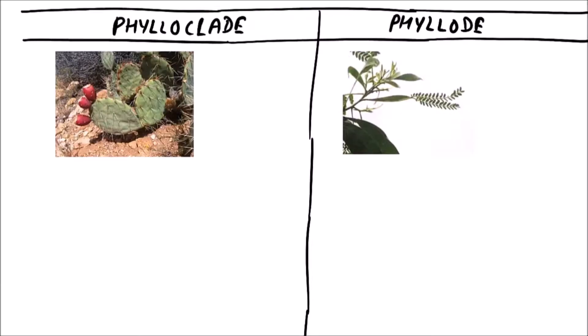Welcome to Studio Biology. In this video we are going to discuss the differences between a phylloclade and a phyllode. 'Phyllo' means leaf and 'clade' means stem, so a phylloclade is a stem which appears to be leaf-like.